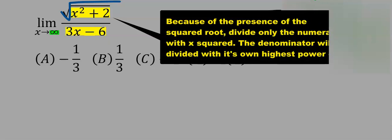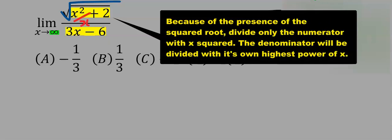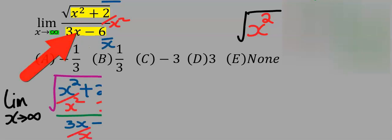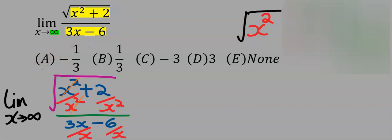I will divide everything at the numerator with x squared. However, at the denominator I'm going to divide everything at the denominator just with this x. Next this will take away this and x will take away x.